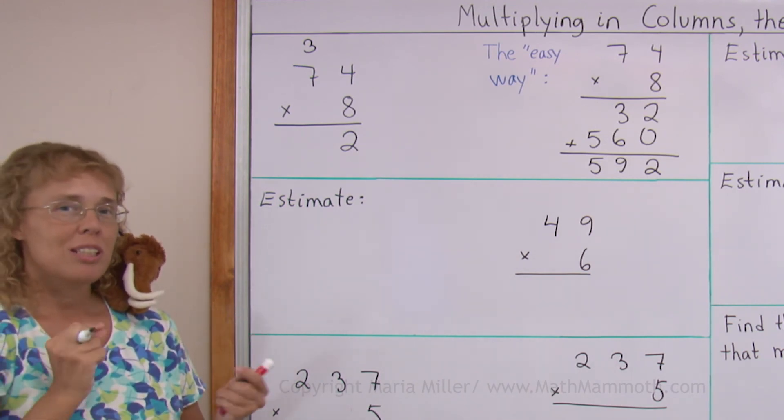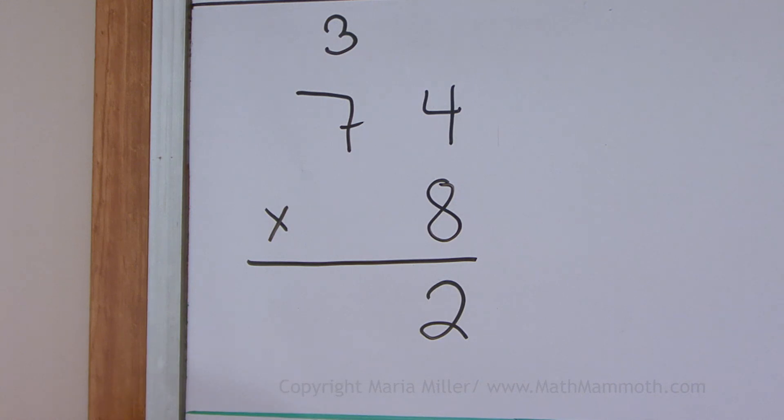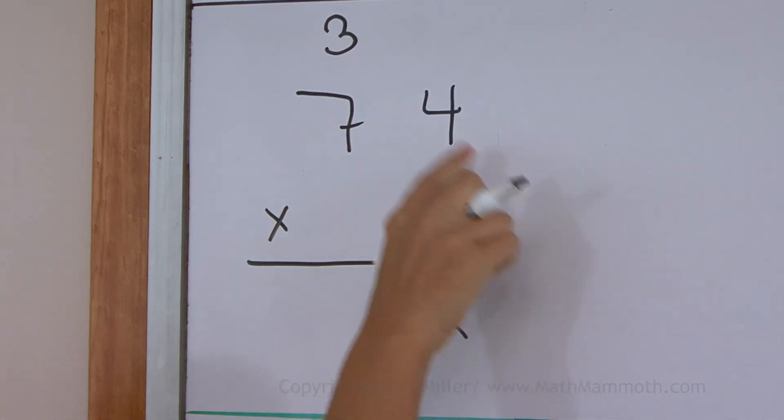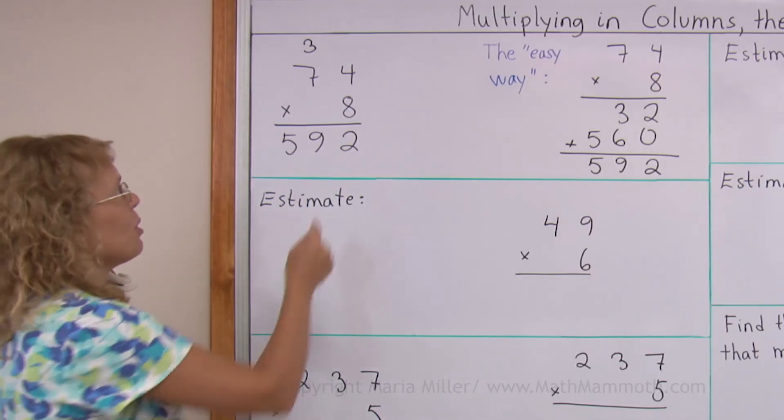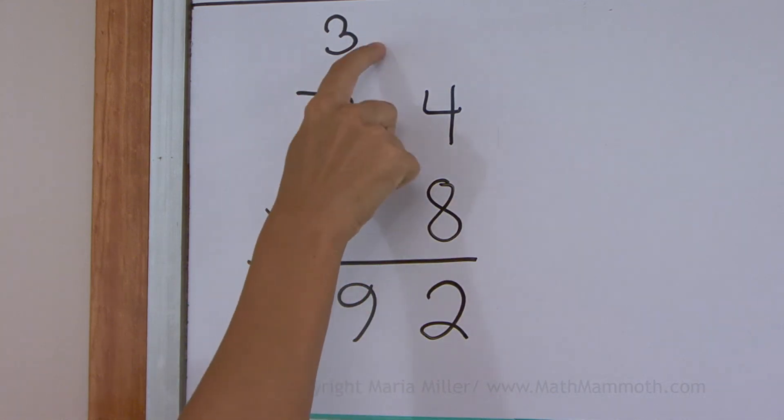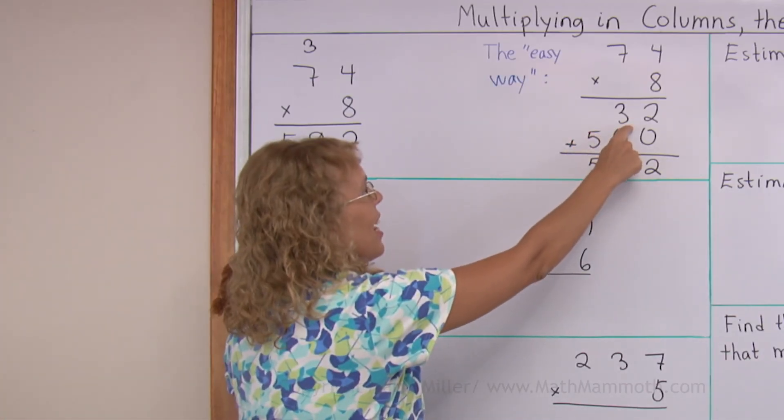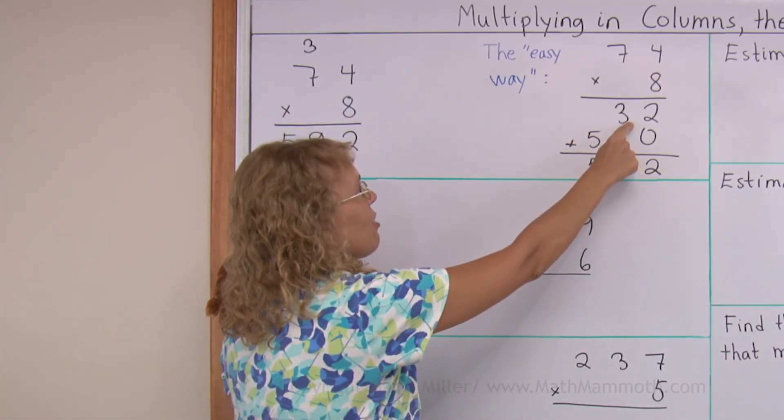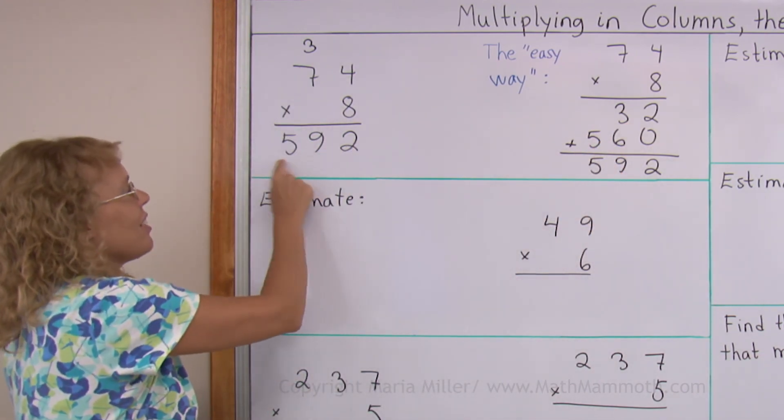But when we are using this algorithm, we just think of it as 8 times 7, 56, plus 3. 59. 8 times 7, plus 3. So we get 59, and that's written over here. So when we multiply the tens, right after that, we add those 3 tens that were regrouped. These 3 tens, they are added. So the addition 3 plus 56 is done in the mind and written here as 59.